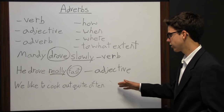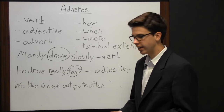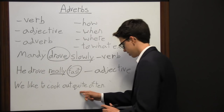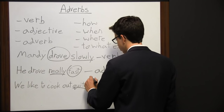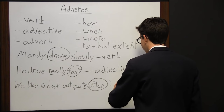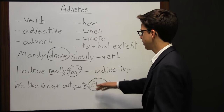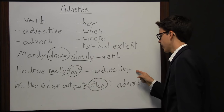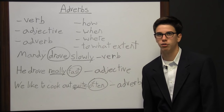The last sentence says 'We like to cook out quite often.' Here we see two adverbs — 'quite' and 'often' — neither of which ends in '-ly.' The adverb 'quite' is describing 'often,' so it's describing another adverb. So we've seen three examples: one adverb describing a verb, one describing an adjective, and one describing another adverb.